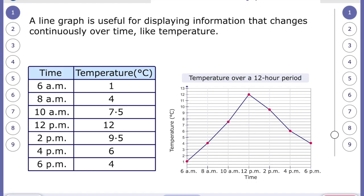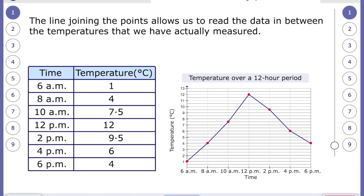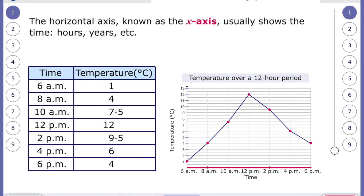A line graph is useful to explain information that changes continuously over time like temperature. And the points on a line graph are connected by a line. Hence the name line graph. The line joining the points allows us to read the data in between the temperatures that we have actually measured.